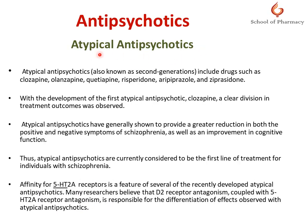After the butyrophenones and phenothiazines, there is one more category — atypical antipsychotics. These are known as second-generation antipsychotic drugs, such as clozapine, olanzapine, quetiapine, and risperidone. With the development of these atypical antipsychotics, a clear division in treatment outcomes was observed. Atypical antipsychotics generally show a greater reduction in both positive and negative symptoms of schizophrenia, as well as an improvement in cognitive functions.